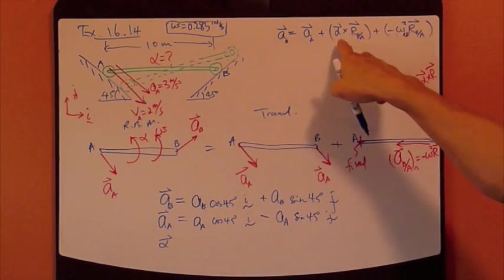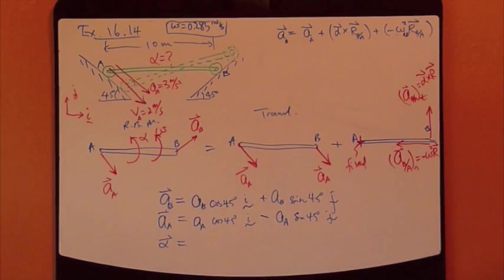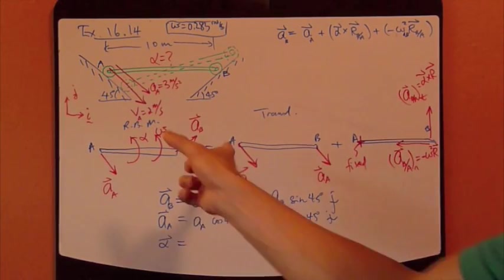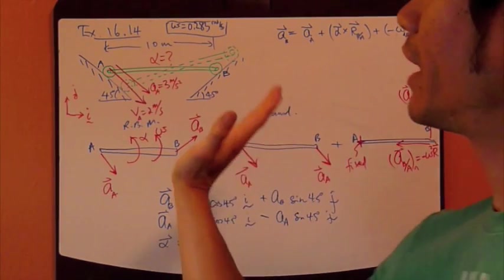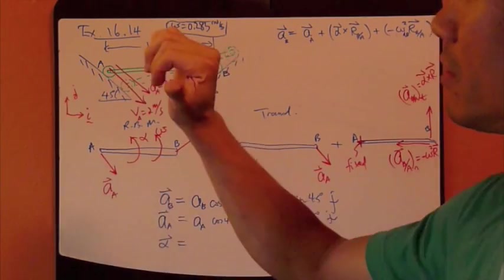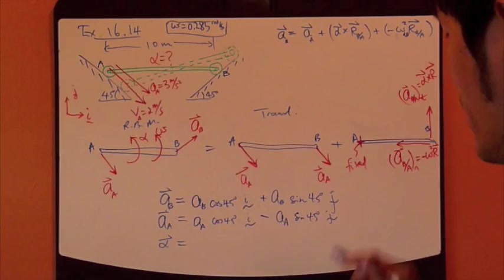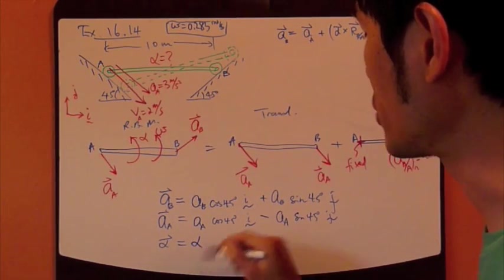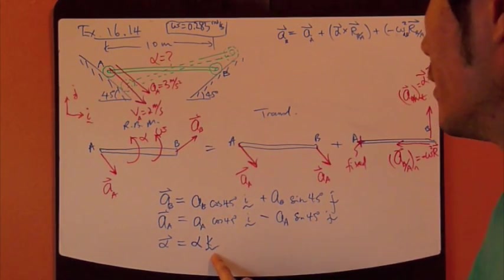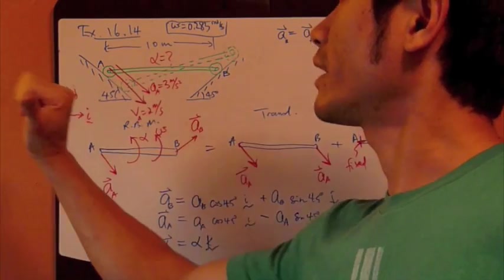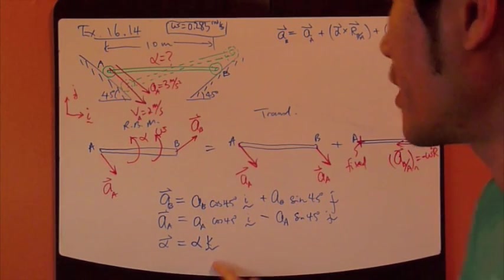Alpha, okay? Alpha itself. How's alpha pointing? Well, alpha, you know that it's counterclockwise. From right-hand rule, again, alpha goes counterclockwise, so K points out. So that's the alpha, magnitude, K component, okay?